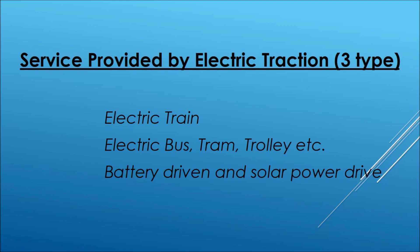Electric buses consist of a group of batteries which are charged using electrical energy. Once fully charged, the electric bus is ready to drive from one place to another. Trams are also a kind of electric bus, but the difference is that trams do not have batteries — they take power from an overhead transmission line and run on a particular rail.